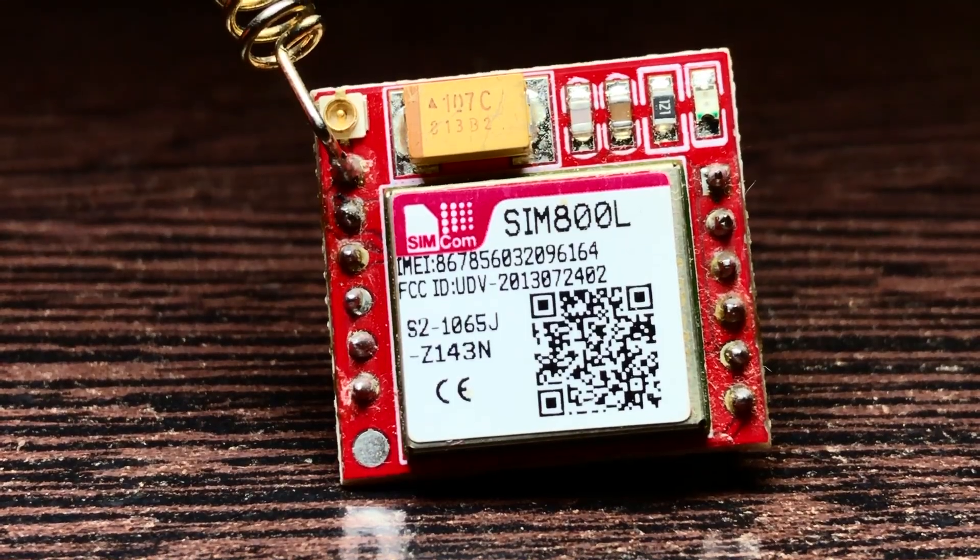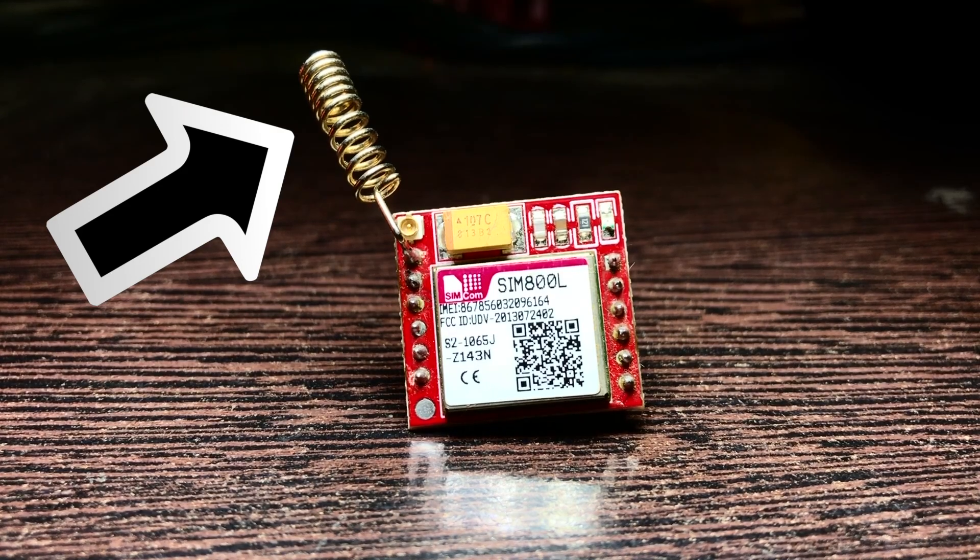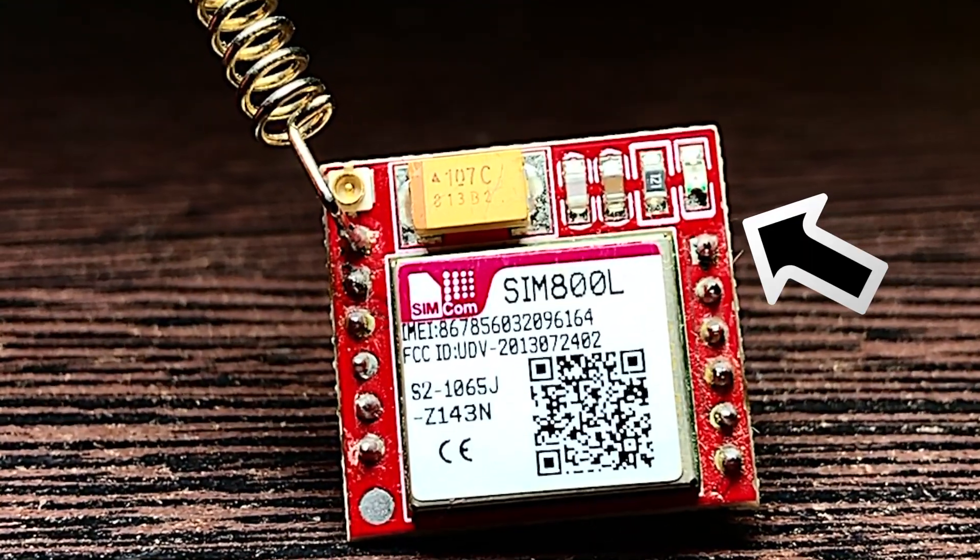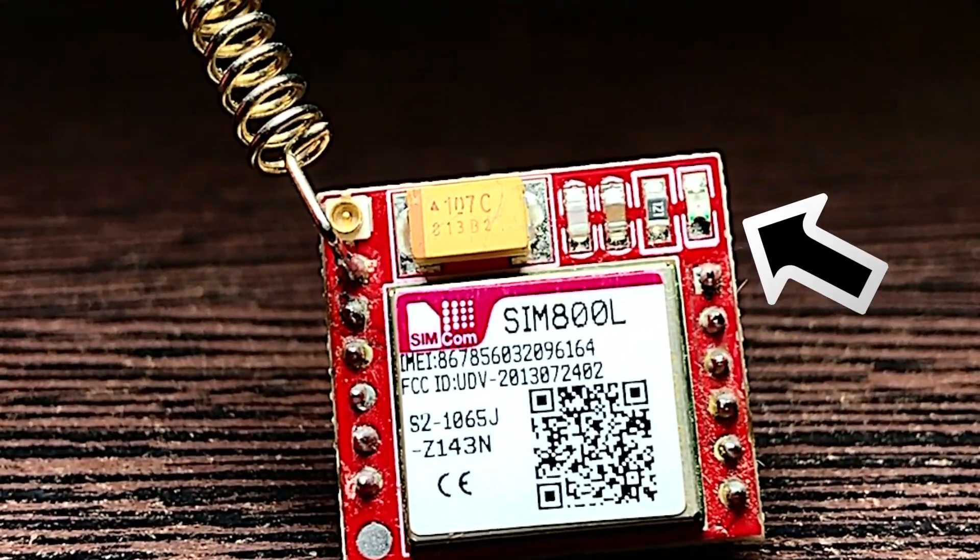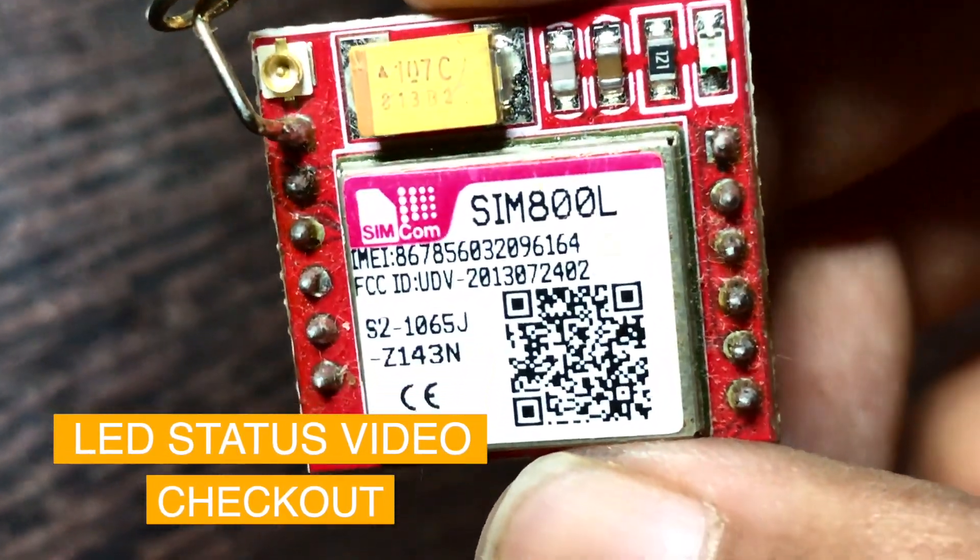I have soldered this and you also have to solder this antenna, this golden copper wire right here. There comes the LED. This is the most important part of this module and it lets you know the state by blinking.